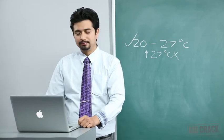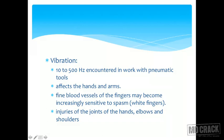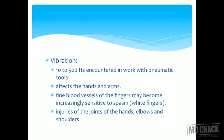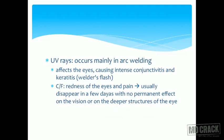Vibration frequencies of 10 to 500 Hz are encountered in routine work with pneumatic drills and similar equipment. These affect the arms and hands most. What happens is that the small arterioles in the hands become sensitized to vibration and go into spasm, causing a disease called white fingers. Fine blood vessels of the fingers become increasingly sensitive to spasm. Injuries to joints of hands, elbows, and shoulders are other associated injuries caused by vibration.